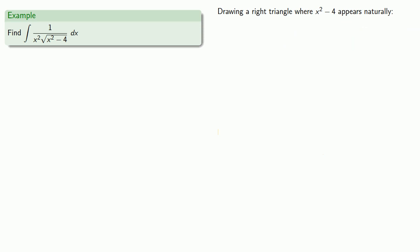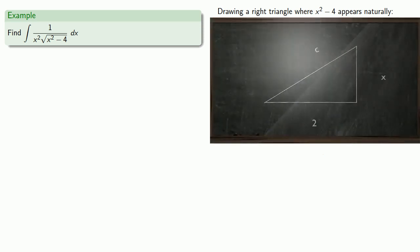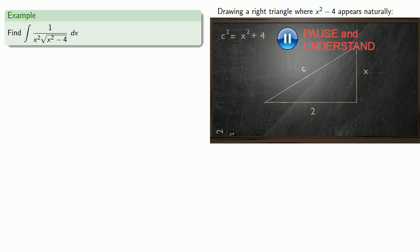If you don't play, you can't win, so let's try to draw such a triangle. Setting up our Pythagorean relationship. Making x and 2 the lengths of the legs of the right triangle does not give us a right triangle where x squared minus 4 appears naturally.